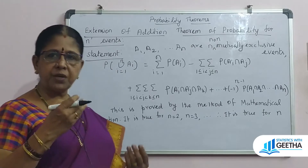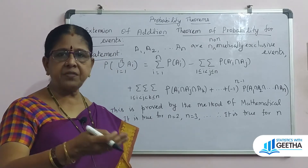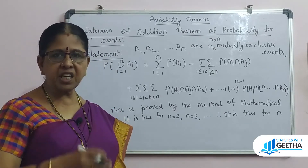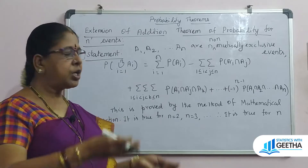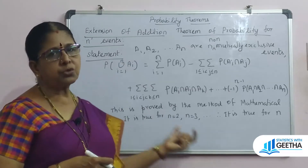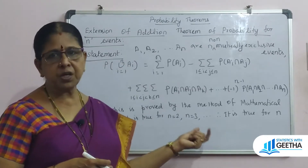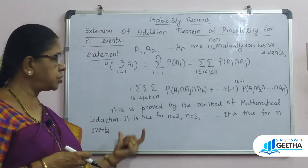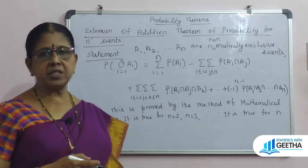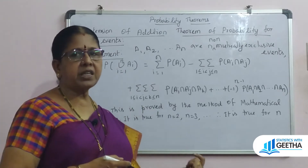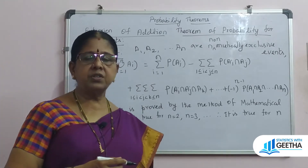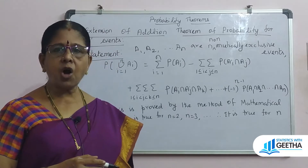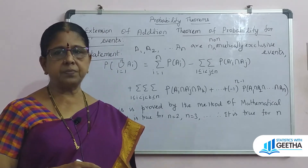To prove this, we first prove for two events, then assume it is true for N minus 1 events, and from that we can prove the theorem is true for N events. This is the extension of the addition theorem for N non-mutually exclusive events.